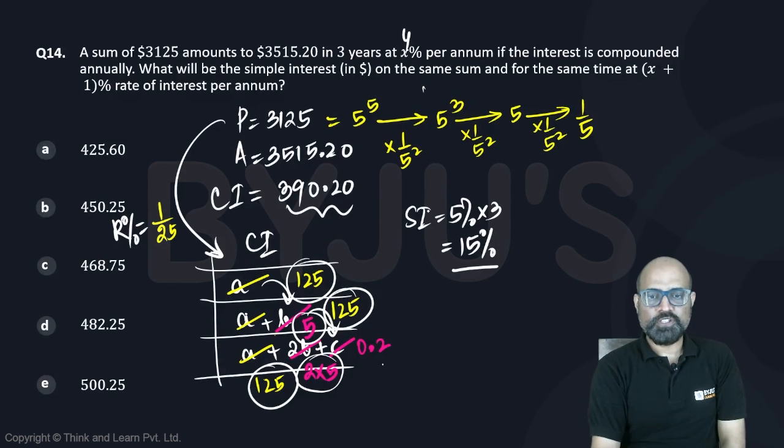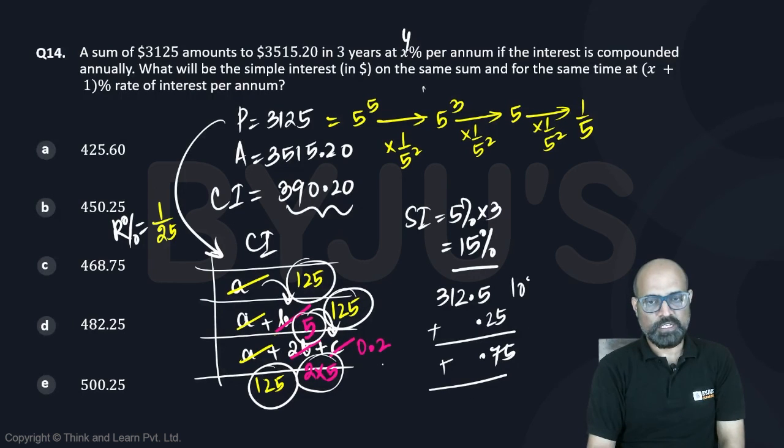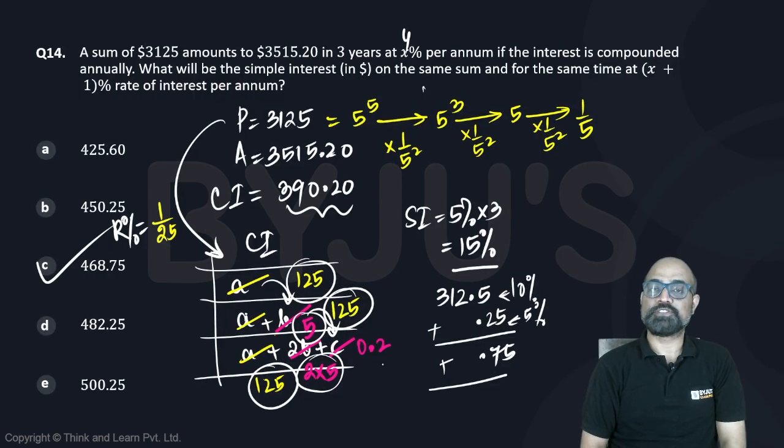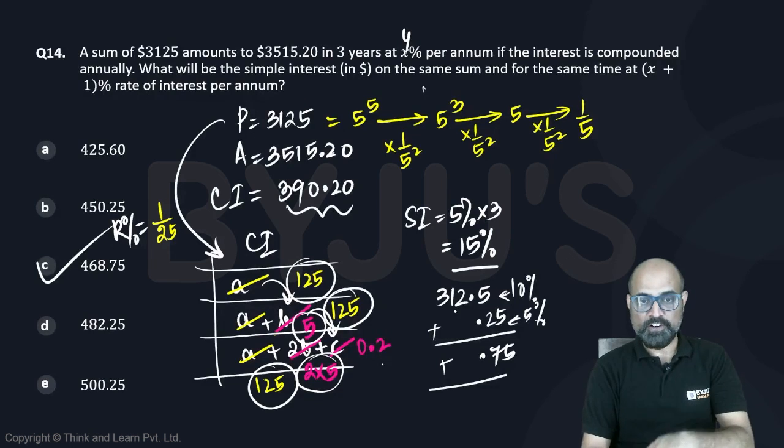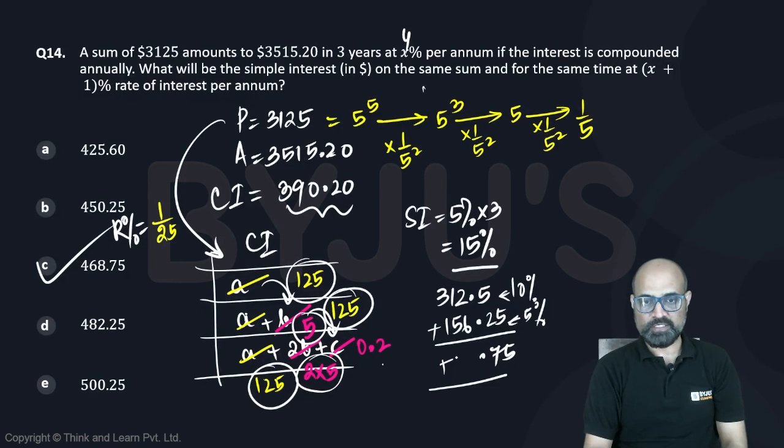15 percent of 3125. Well, 10 percent is going to be 312.5 and 5 percent will be 156.25. So it should end in 0.75. This is 10 percent and this is 5 percent, so the only option that makes sense is 468.75. Option C.